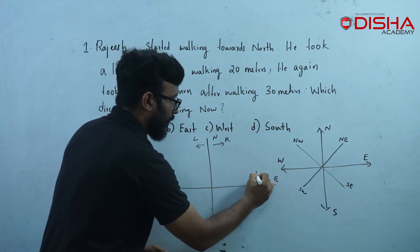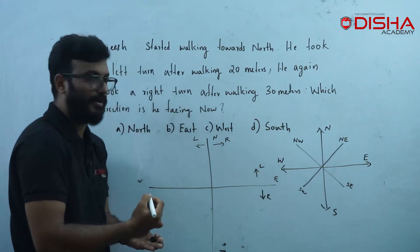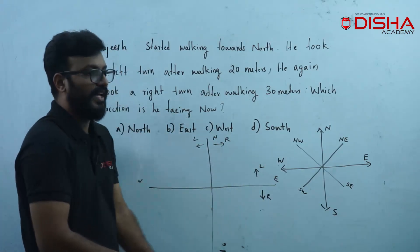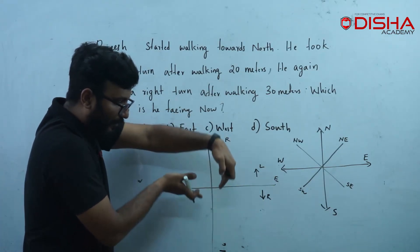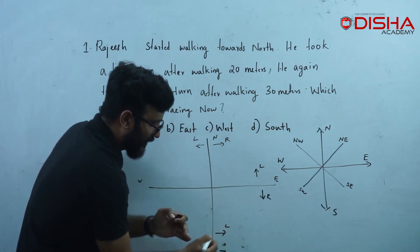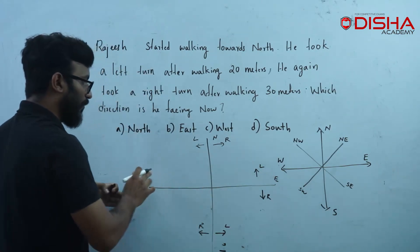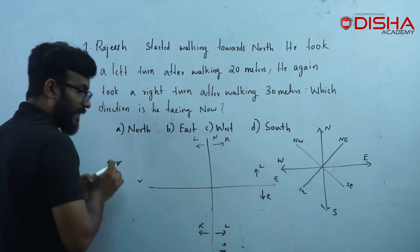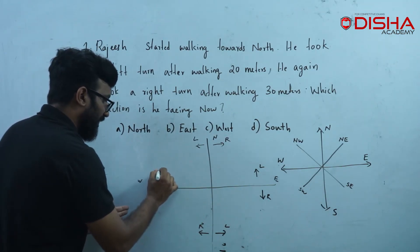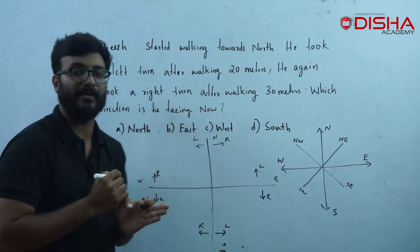We are traveling in the south direction, then toward the east. Here is the left, and here is the right. If we move to the west, we will move to the west. This is the right, this is the left. We will see how left and right are oriented.